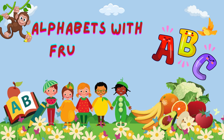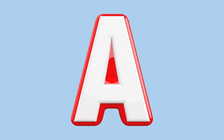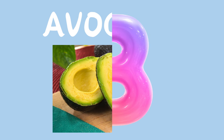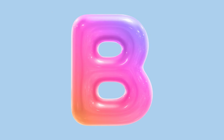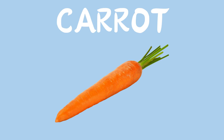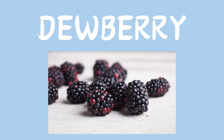Alphabets with Fruits and Vegetables. A is for Avocado. B is for Broccoli. C is for Carrot. D is for Dewberry.